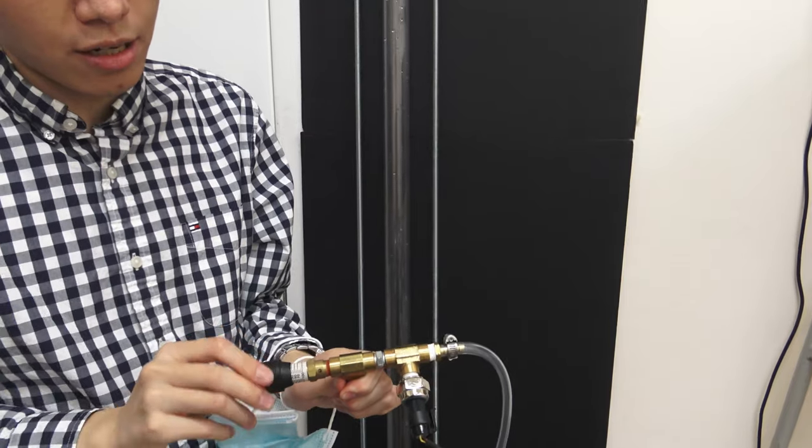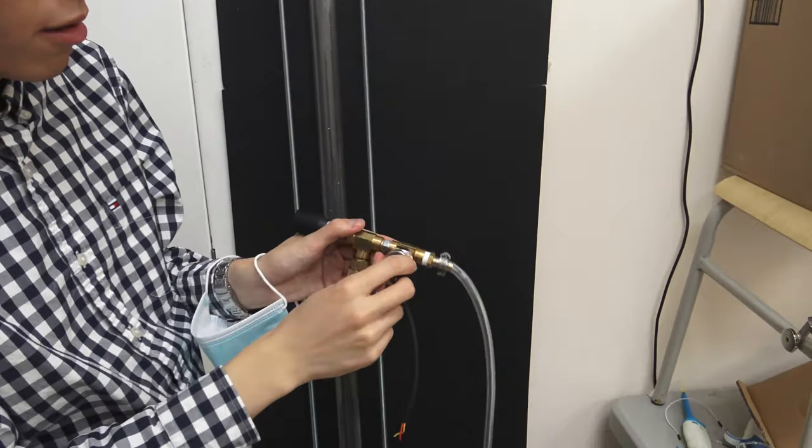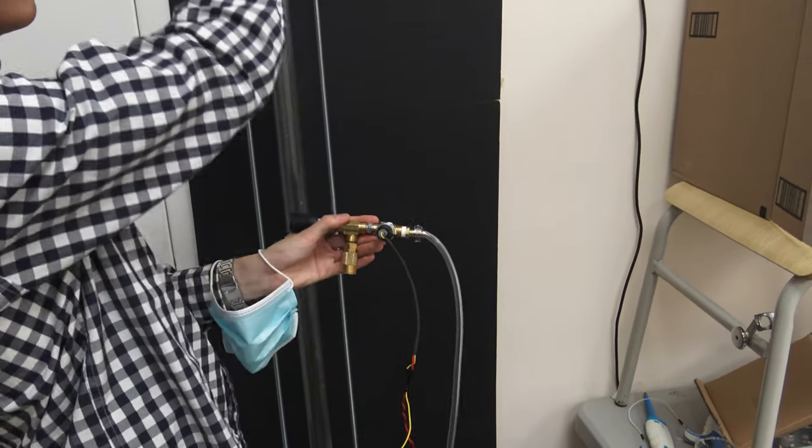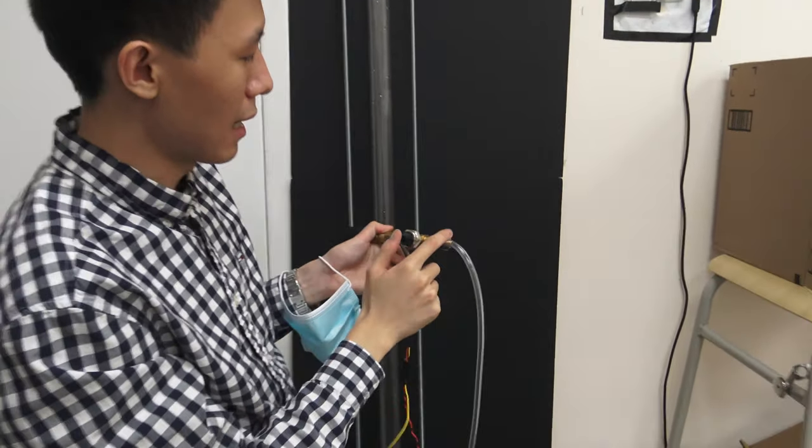And then we have a safety valve. Safety is also really important. This is an adjustable one so you can actually change what pressure it blows. Then through this coupler it connects to our pressure transducer. This will measure the pressure inside the tube, so the air above the water.